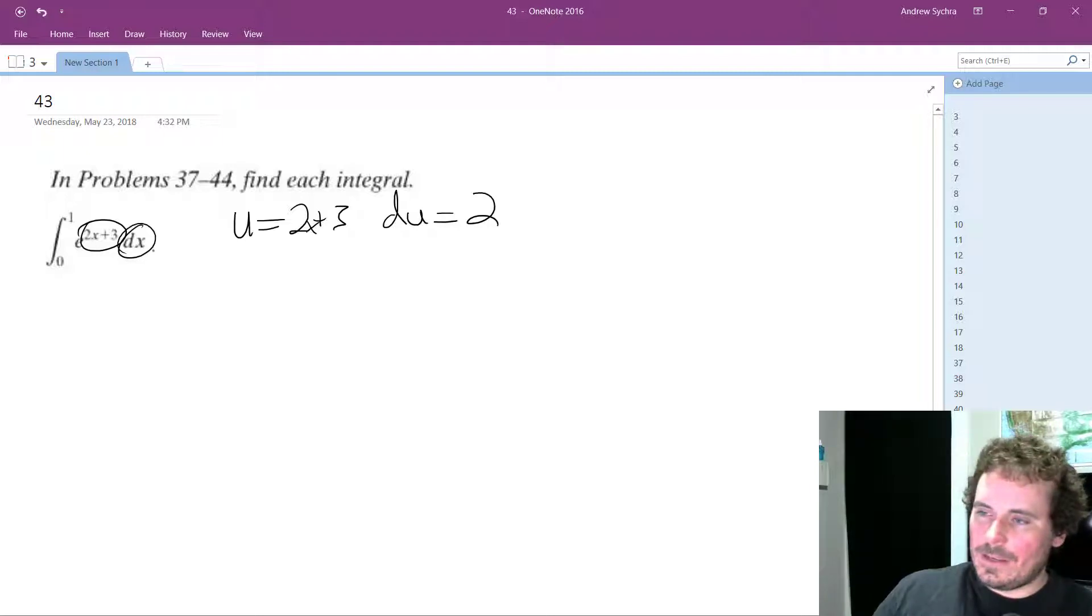And you can see here, to get our du equivalent to our dx, we need to multiply. Our du is going to be equal to 2dx, or 1 half of du is equal to dx.